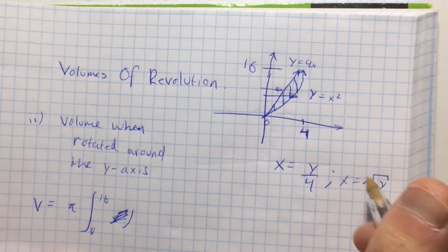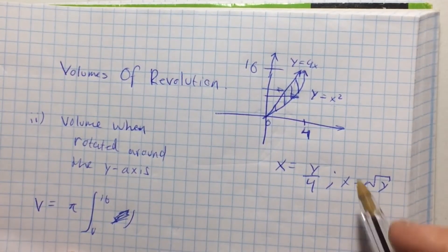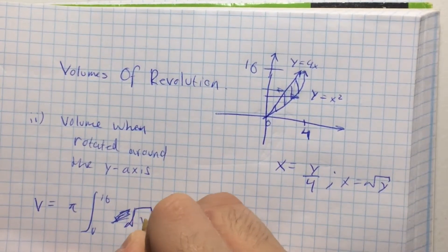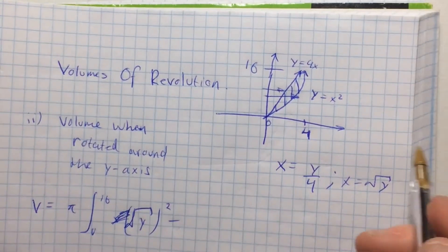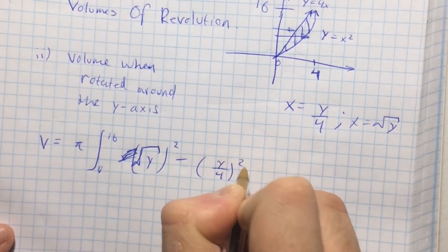So y equals x squared, x equals square root of y, y equals 4x, x equals y over 4. Which means that it's the square root of y squared minus y over 4 squared, dy.